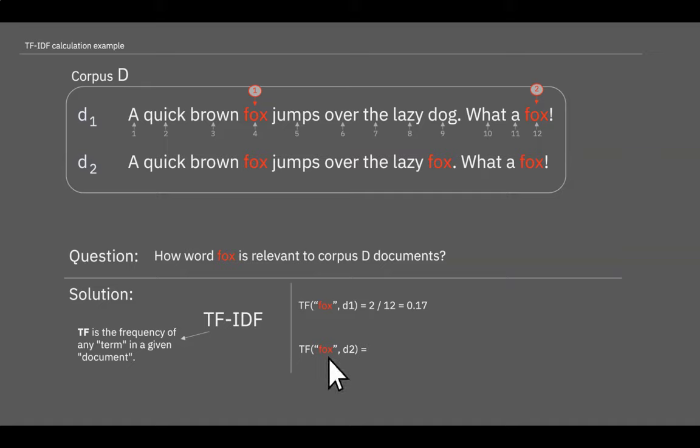In this case we have fox occurring three times in this document. So the calculation will be as follows: 3 divided by 12 equals 0.25. Keeping in mind that d1 and d2 have the same number of total words. The first part of calculation is done.